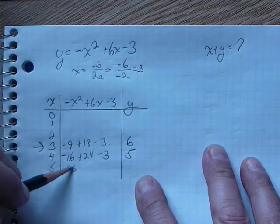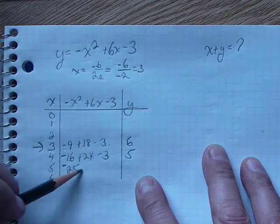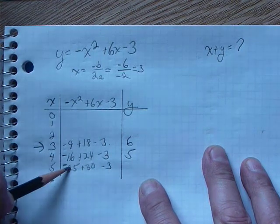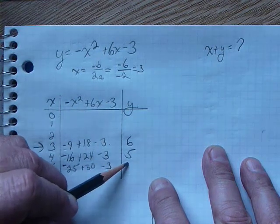5 squared is 25, we put a minus in front. 5 times 6 is 30, bring down our negative 3. So, this is a positive 5 minus 3, so that's 2.